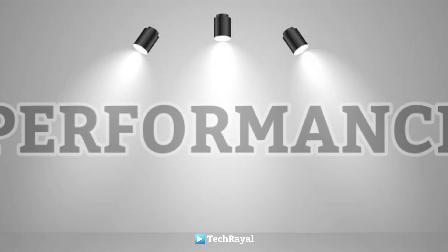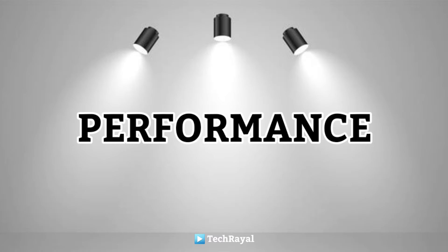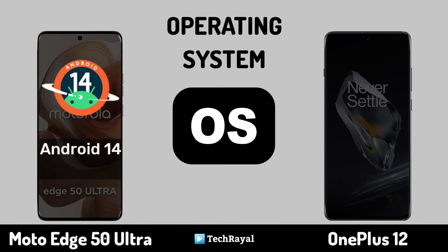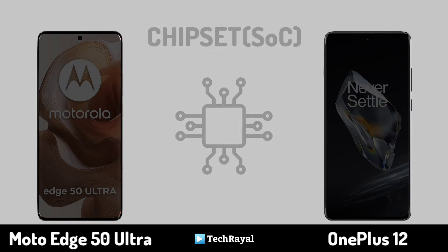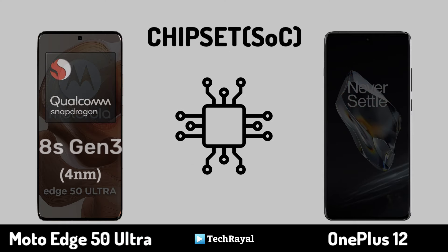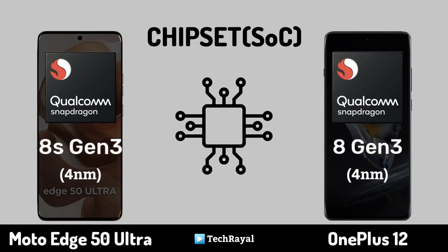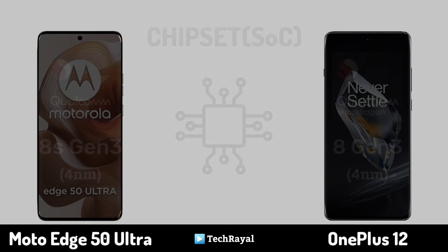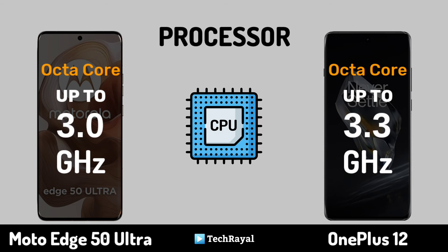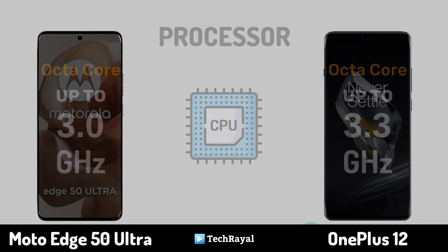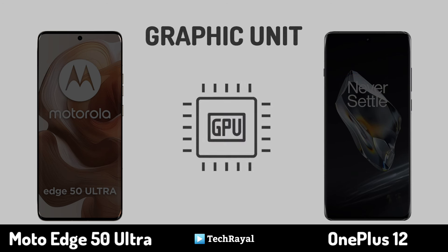Now, Core Performance: Operating System. Chipset. Processor. Graphic Unit.